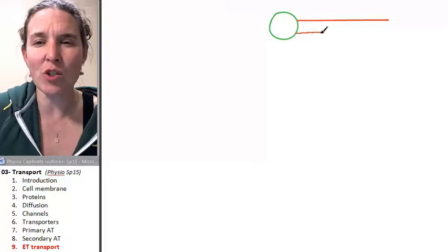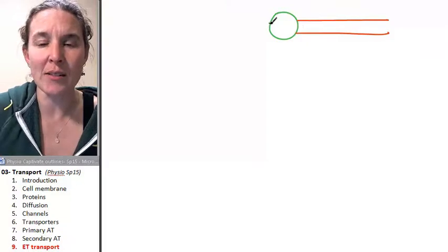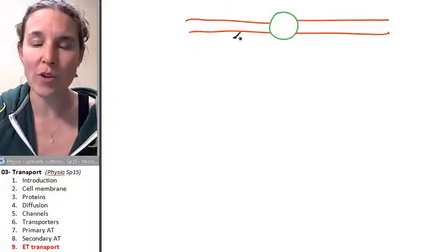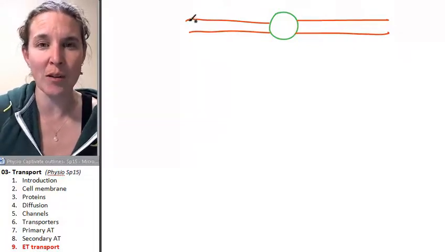But sometimes you don't have to draw all the crazy details. I usually try to remember to draw my cell membrane with two lines. Why? Why are there two lines representing that cell membrane?